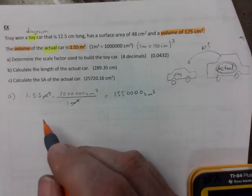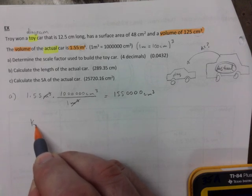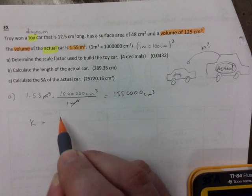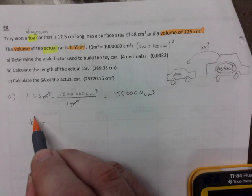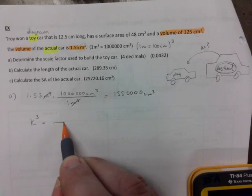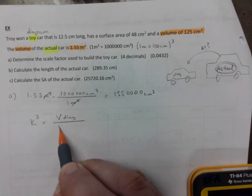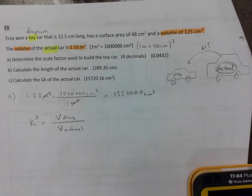Now we can use the formula. Normally you would just say k equals diagram over actual, but that would be for one-dimensional things. But because we're using the volume, you would say volume of the diagram divided by volume of actual.